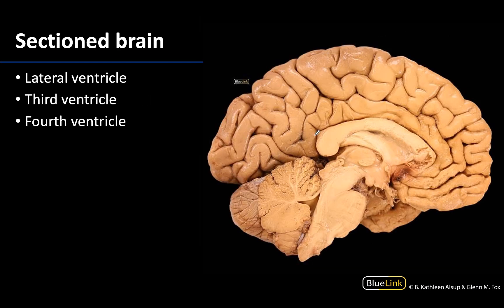Now let's look at an actual brain, not a model. This is a hemisected brain, meaning the left half of the brain, and we can have a better look at the internal portions with this particular view. I'm about to point out the general areas of where the ventricles would be. Keep in mind for the third and fourth ventricles, which are in the midline, you would need the other half of the brain to complete the space.